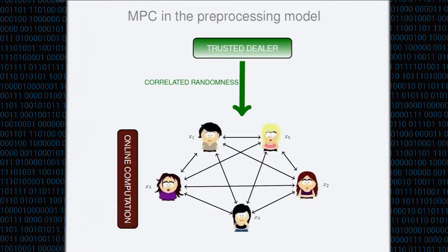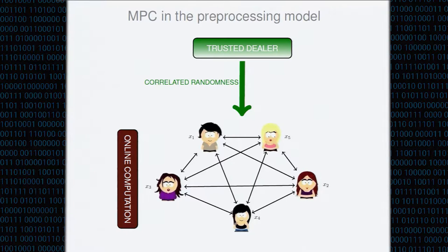Typically the public key machinery needed to define an MPC protocol in this task is very expensive. One possible solution is to define our MPC protocol in the so-called preprocessing model, where we assume a trusted dealer which doesn't need to know the function to be evaluated or the inputs. It just supplies all the correlated randomness needed in the online evaluation, and then the online computation can be information-theoretic. In the online computation the circuit is evaluated gate by gate in a secret-shared fashion.